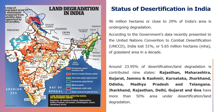What is the status of desertification in India? According to 2022 data, 96 million hectares — close to 29 percent of India's geographical area — is under degradation. According to government data presented to the United Nations Convention to Combat Desertification, India lost 31 percent or 5.65 million hectares of grassland in a decade. Around 23.95 percent of desertification or land degradation is contributed by nine states: Rajasthan, Maharashtra, Gujarat, Jammu, Kashmir, Karnataka, Jharkhand, Odisha, Madhya Pradesh, and Telangana.